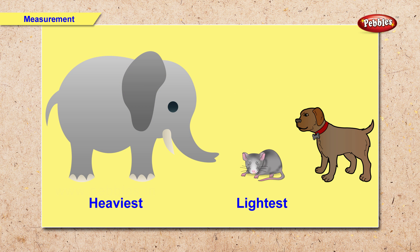Here we have three animals: an elephant, a rat and a dog. Which animal is the heaviest and which animal is the lightest? Right. The elephant is the heaviest. The rat is the lightest.